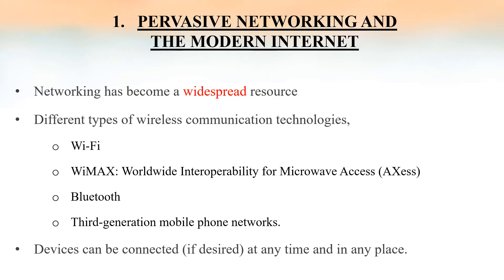The first trend in distributed computing was pervasive networking and the modern internet, in which the networking has become a widespread resource and the modern internet has a vast interconnected collection of computer networks. It can be of many different types — for example, it can be Wi-Fi, WiMAX, Bluetooth, or third generation mobile phone networks. It's a collection of all this kind of computer networks, and networking has become pervasive or widespread.